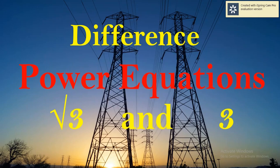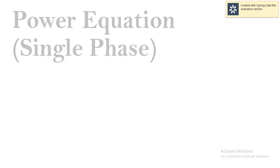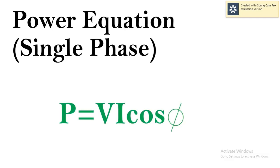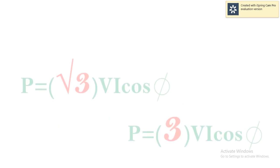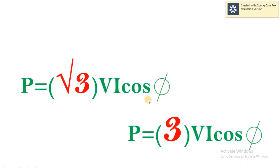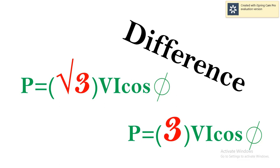We all know the equation of power in single phase is P equals Vi cos phi. But when it comes to three-phase, we generally see two equations: P equals root 3 Vi cos phi, and the second one is P equals 3 Vi cos phi. Now, what's the difference between these two?